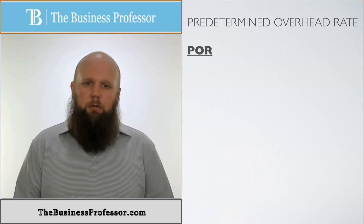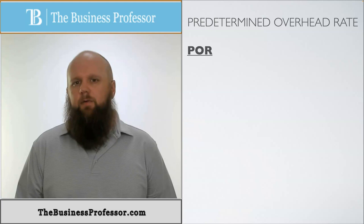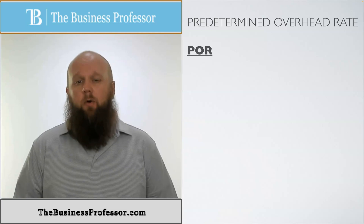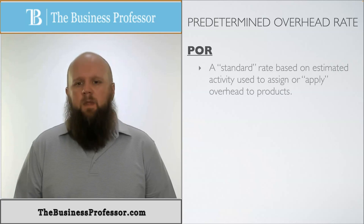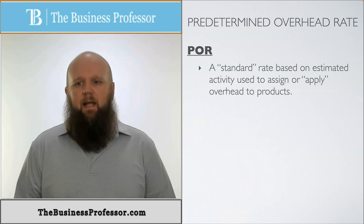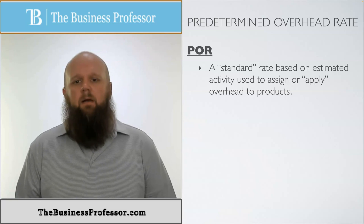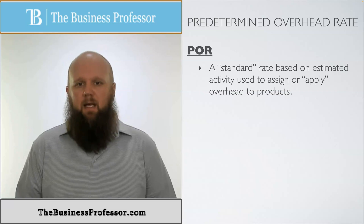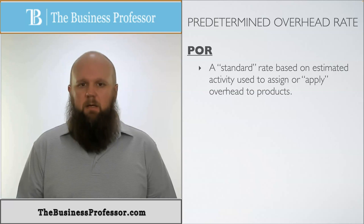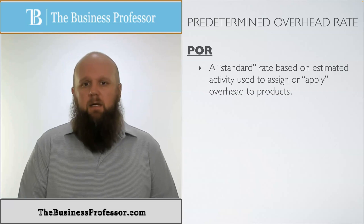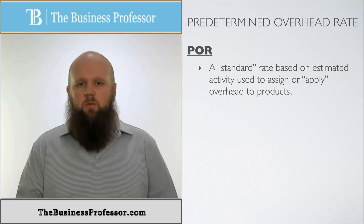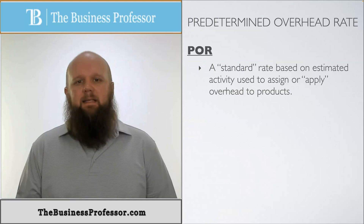So how do we do that? We use what's called a predetermined overhead rate, or POR. A POR is a standard rate based on estimated activities used to assign or apply overhead to products. It is a calculation that we do at the very beginning to know how much we're actually going to apply to each job.